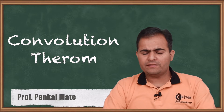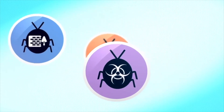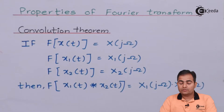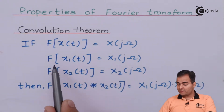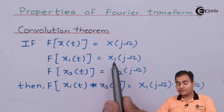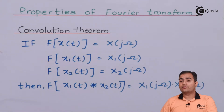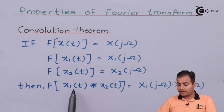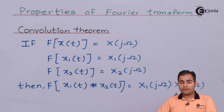We will study the statement first and then move on to the proof. If the Fourier transform of x(t) is represented by X(jω), then the Fourier transforms of x1(t) and x2(t) are represented in the Fourier domain by X1(jω) and X2(jω). According to the convolution theorem of the Fourier transform, the Fourier transform of x1(t) convolved with x2(t) is represented by X1(jω) multiplied by X2(jω).